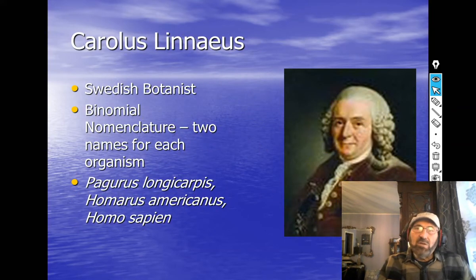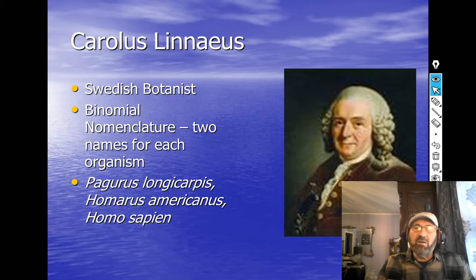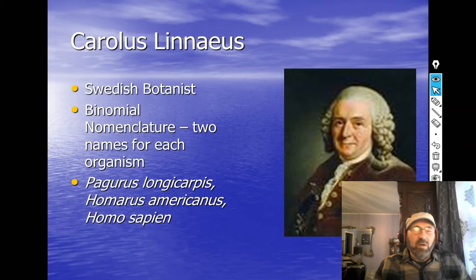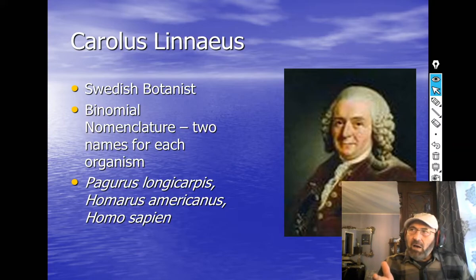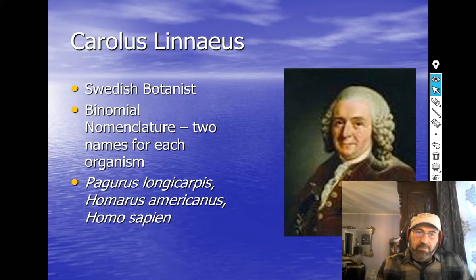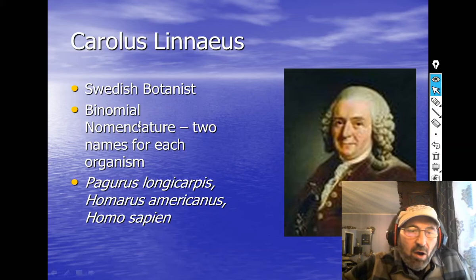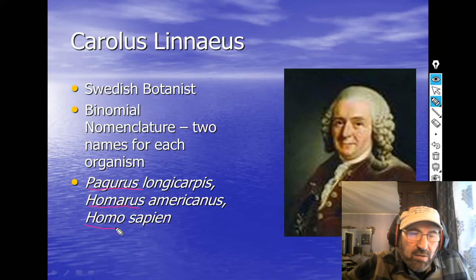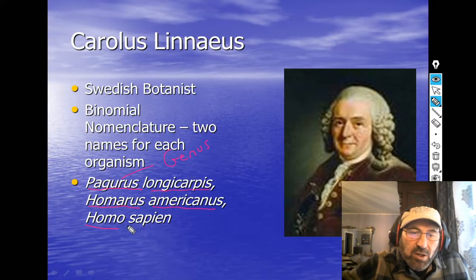Along comes this guy in the late 1700s — Carolus Linnaeus. He was a Swedish botanist, kind of full of himself — an interesting character. If he didn't like you, he would name a weed after you. But he was definitely brilliant. He figured out how to name organisms. His system is pretty much what we use today. It's called binomial nomenclature, meaning every organism has two names: the genus and the species.